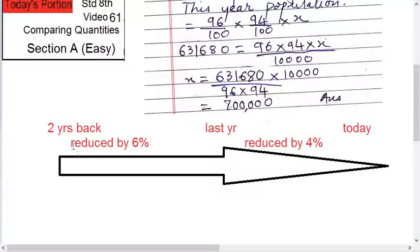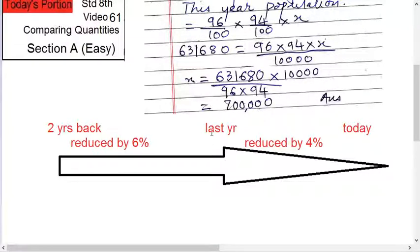See here — it's like this with an arrow. This is 2 years back. Then it reduced by 6% and we came to last year. Last year it was 94 upon 100 into X. Then again it reduced by 4%, and we came to today's population, which is 96 upon 100 into 94 upon 100 into X.